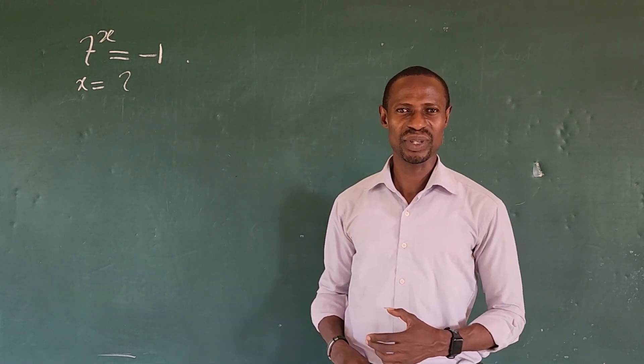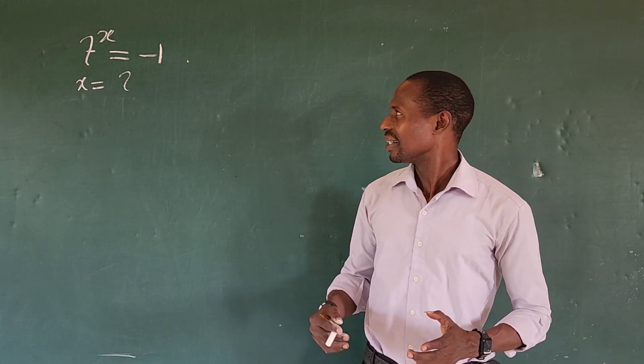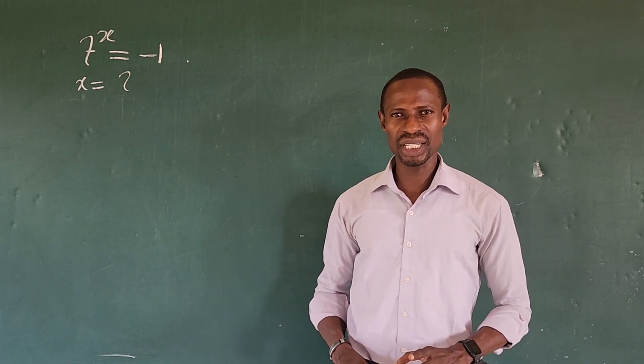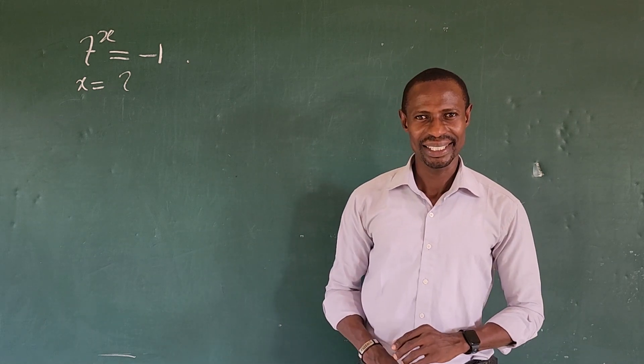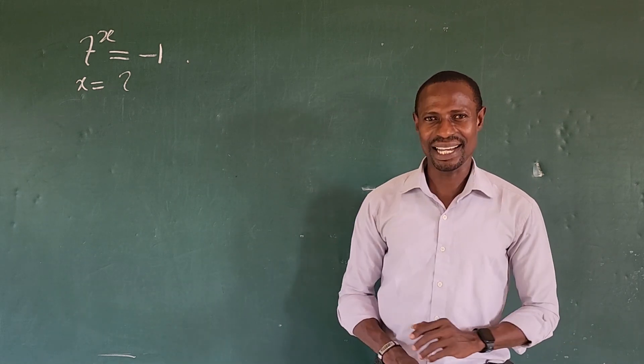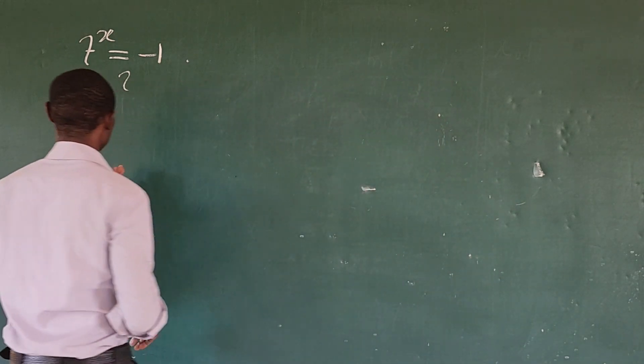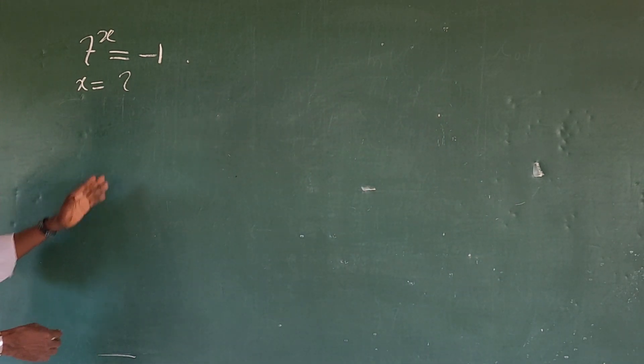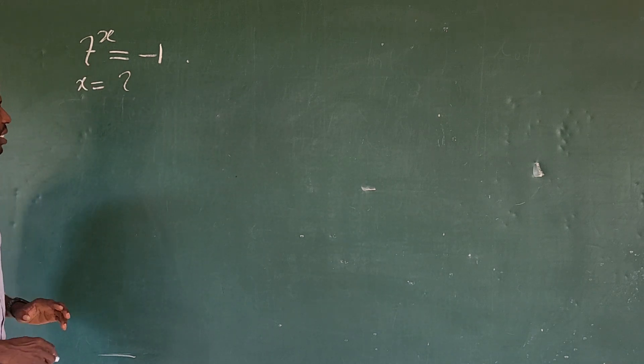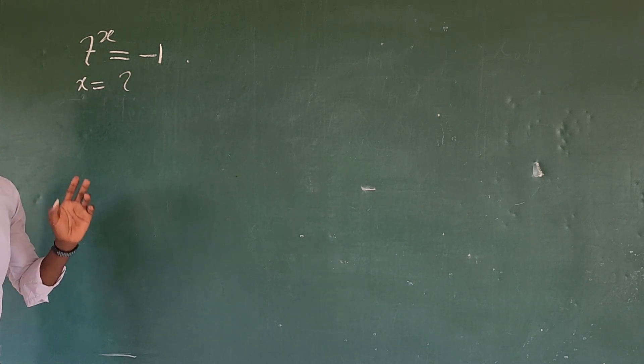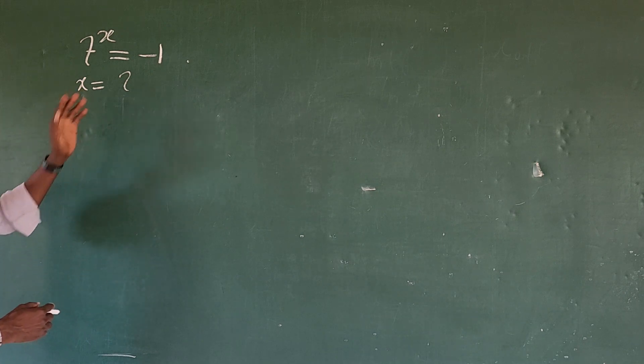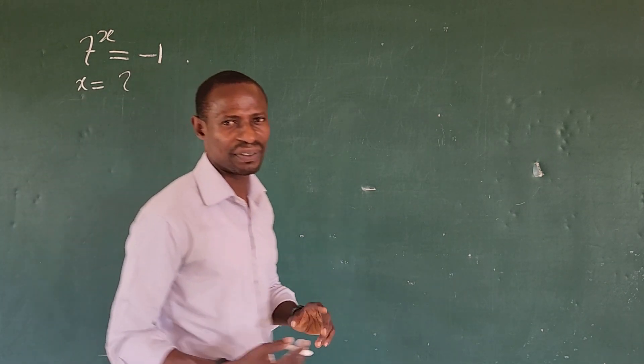When I first solve this question, I asked myself, can we raise it to any number to give us minus 1? So let's check in our survey and if you look at this question carefully, you discover that we don't have a real solution from this. We cannot get a real solution from this exponential problem. So how do we solve for the value of x?